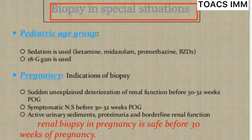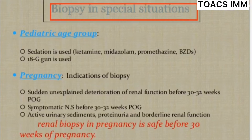Other pregnancy indications include symptomatic nephrotic syndrome before 30 to 32 weeks of gestation, active urinary sediments, proteinuria, and borderline renal function. These are the most common indications of biopsy in pregnant patients. Biopsy in pregnancy is safe before 30 weeks.